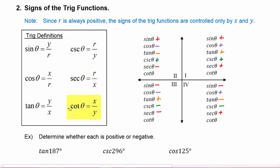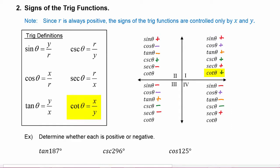Finally, cotangent uses the same variables as tangent, just the reciprocal, so tangent theta and cotangent theta will have the same sign. Whenever x and y are both positive, cotangent is positive. Whenever x and y are both negative, cotangent is also positive. Whenever x and y have different signs, cotangent will be negative, which happens in quadrants two and four.